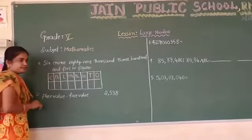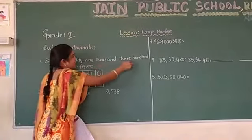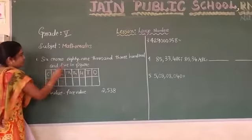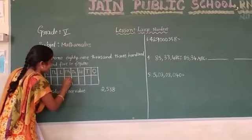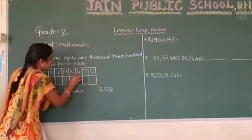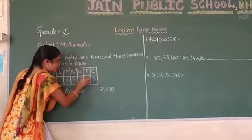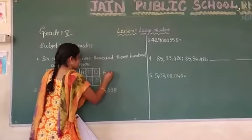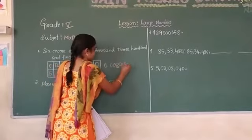Now, 6 crore 89,305. So here we have 6 crore, then 89,000 in the ten-thousands place, then 300 in the hundreds place, and 5 in the units place. If no digit is present in a place, we put 0. So the number is 6,08,89,305.